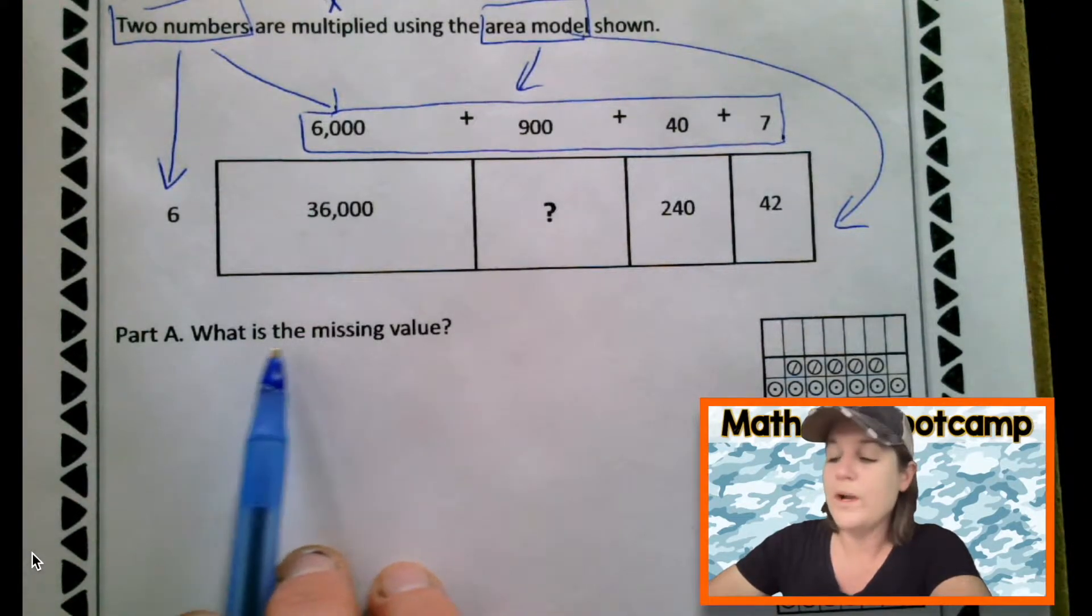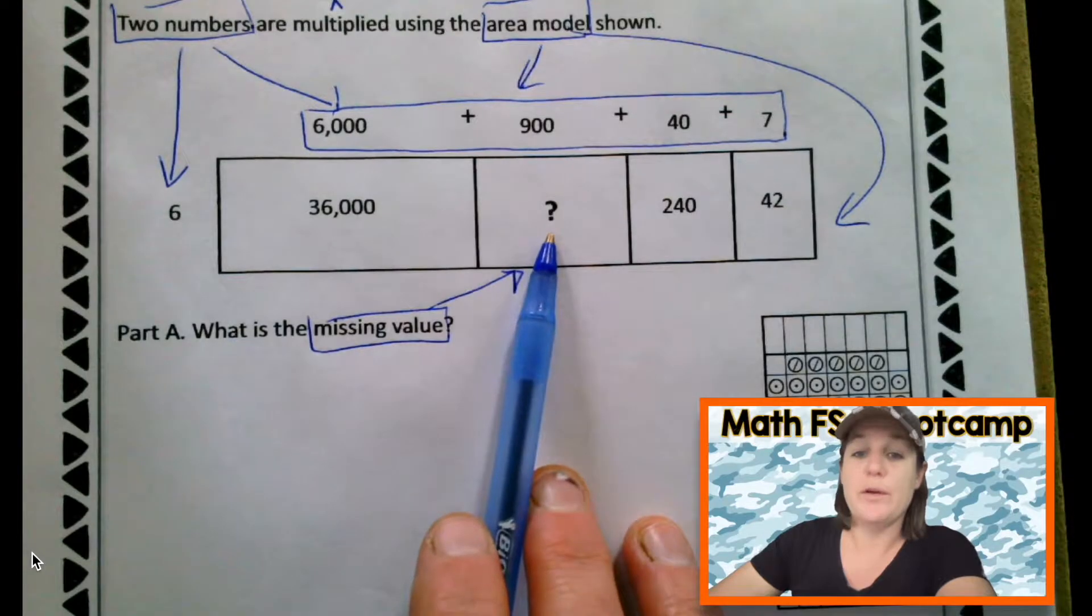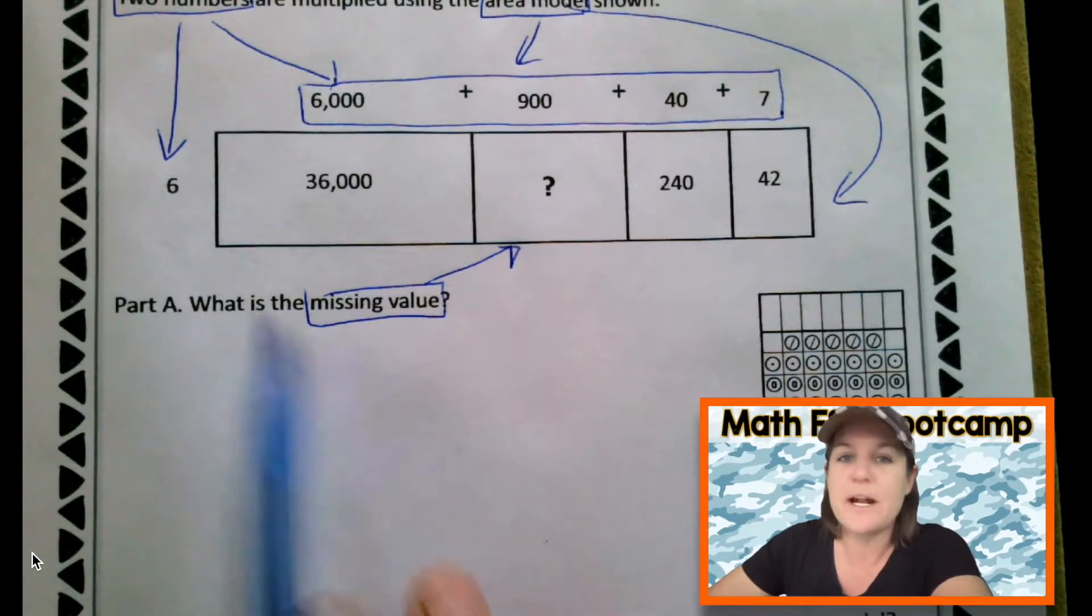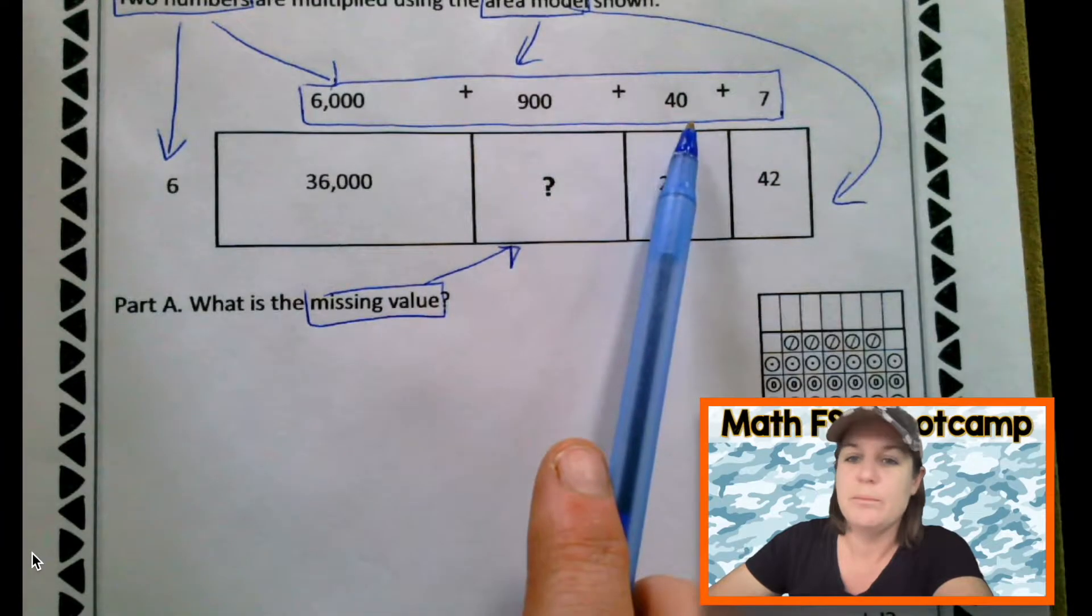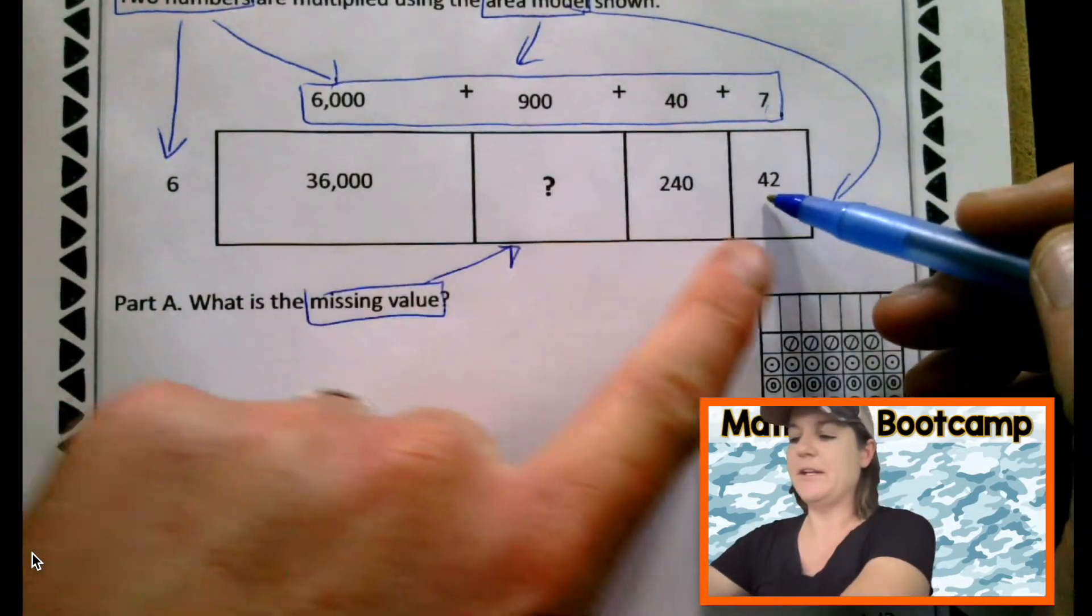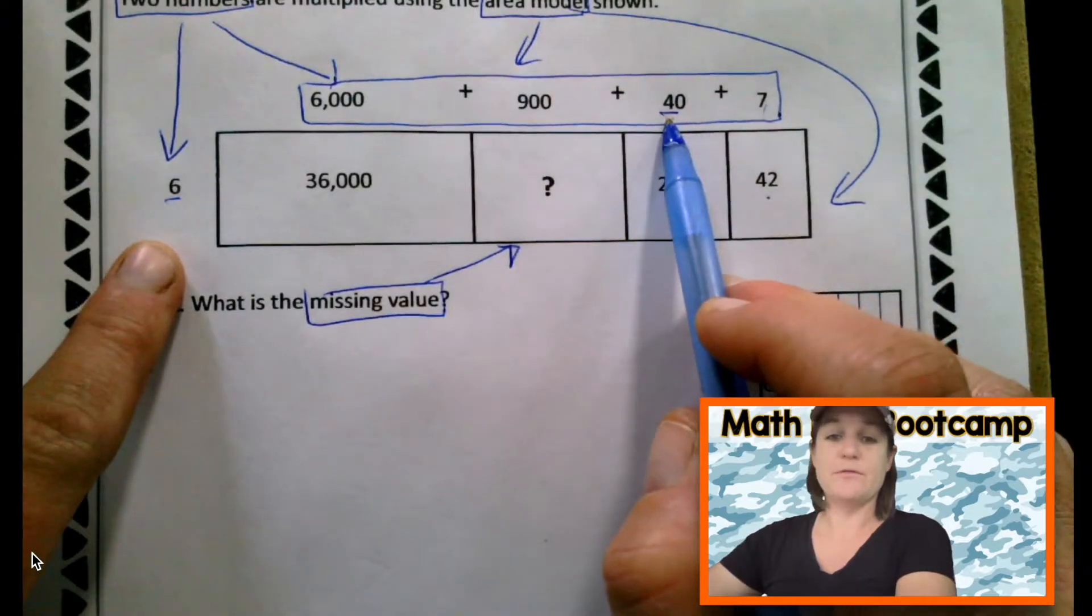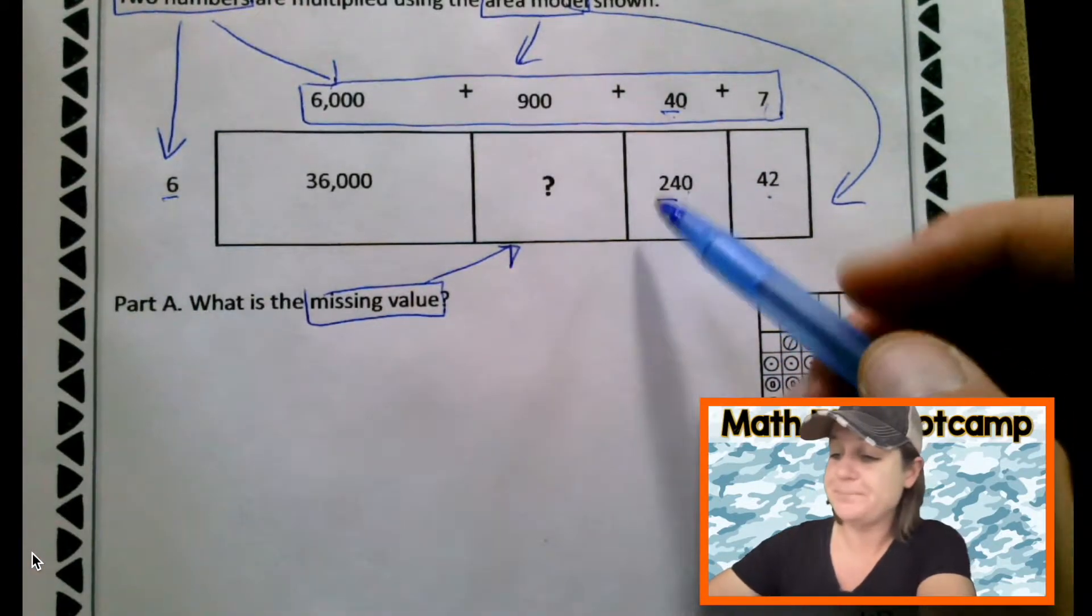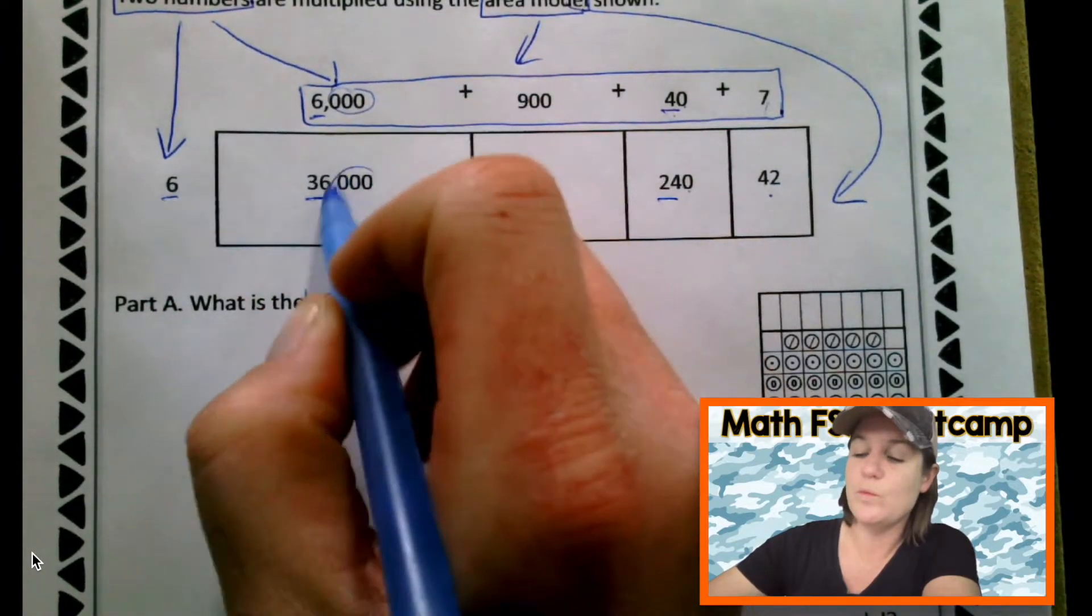The first one says, part A, what is the missing value? Well, the missing value is right here. We don't know what it is, but when we find out, we're going to put it in our gridded response. Let me check this out as if I'm not even sure what this area model is. I see six on this side. I see 6,000 plus 900 plus 40 plus seven. And I'm noticing right away that six and seven, if I multiply them, it's 42. And six and 40, well, I know that six times four is 24. And because there's a zero there, that's why I have a zero here because it's a multiple of 10. And then here I have six and six. Six times six would be 36. And we have one, two, three zeros and one, two, three zeros.